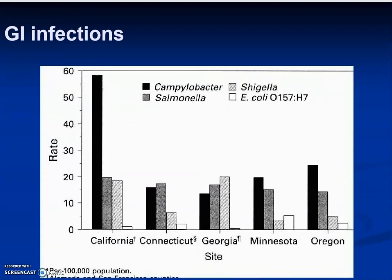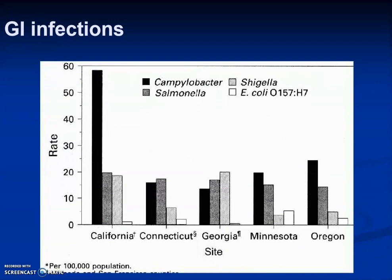Here are some of the offenders for gastrointestinal infections: Campylobacter, Salmonella, Shigella, and E. coli O157:H7. You can also see the rate per 100,000 of the population in various states listed here. California apparently has a lot of Campylobacter infections.